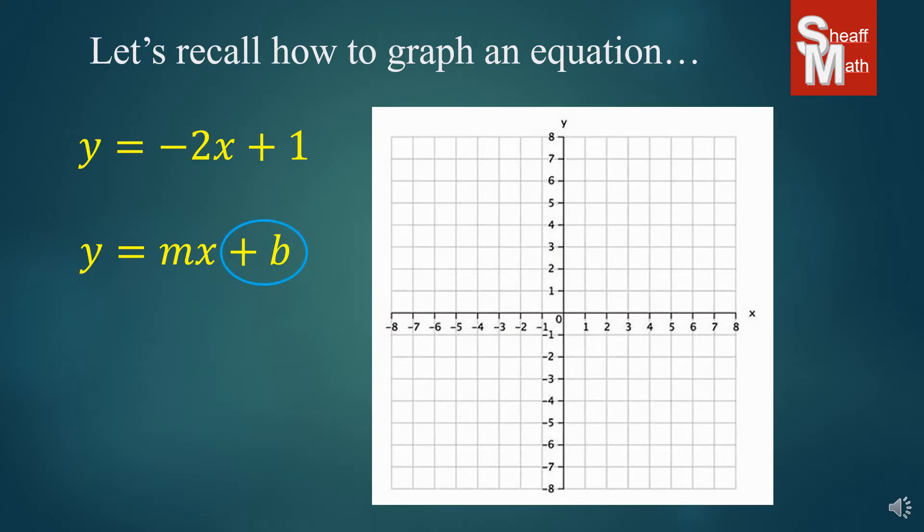And if you recall, the b represents the y-intercept, and our y-intercept here is 1. Now the m represents the slope, and in our case here it's negative 2. And so what we're going to do is we start with the y-intercept and we put a point on the y-axis at that number. So now what we're going to do is we're going to go from that point and use our slope to find the next point. Now anytime you have a whole number or an integer as your slope, you're going to want to put it over 1. That gives us the rise and the run. And so this particular slope is going to go down 2 over 1. And so we put a point there. Now if you want to put more points, just keep going down 2 over 1.